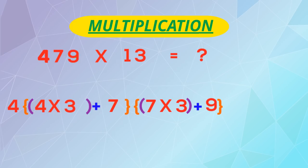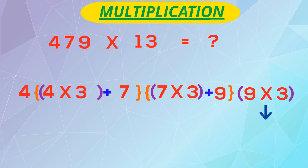Next take 7 and multiply with 3 and add next digit 9 here. Lastly multiply 9 with 3 here. 9 into 3 is 27, we will write 7 and 2 will go for carry over. 7 into 3 plus 9 is 30, 0 we will write, 3 carry over.